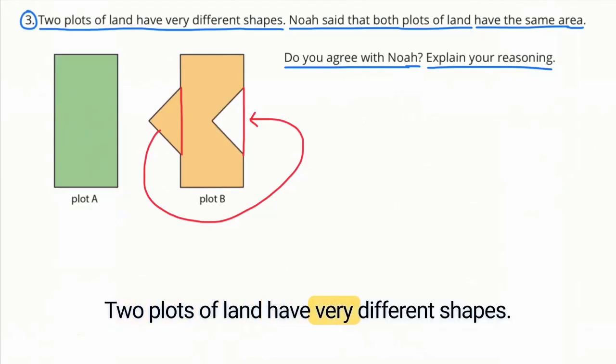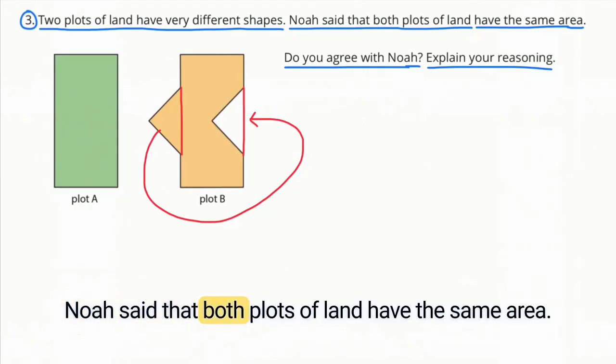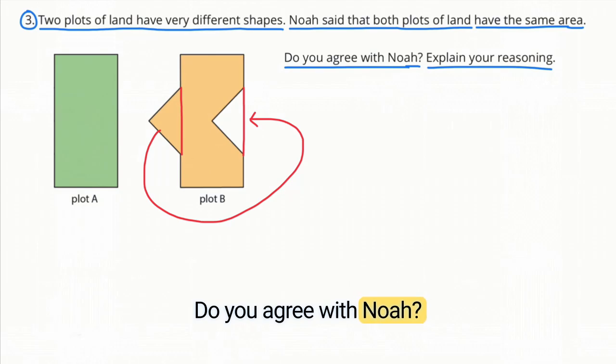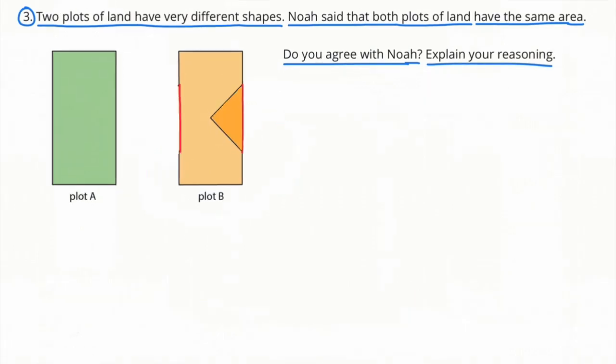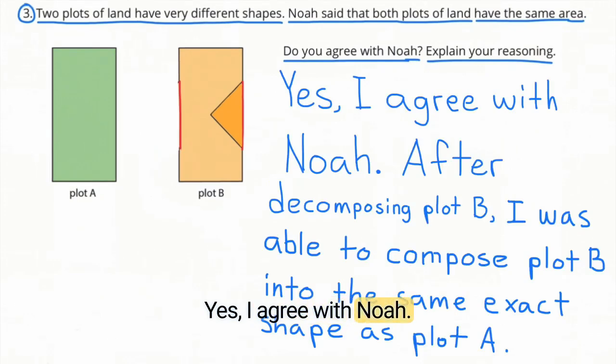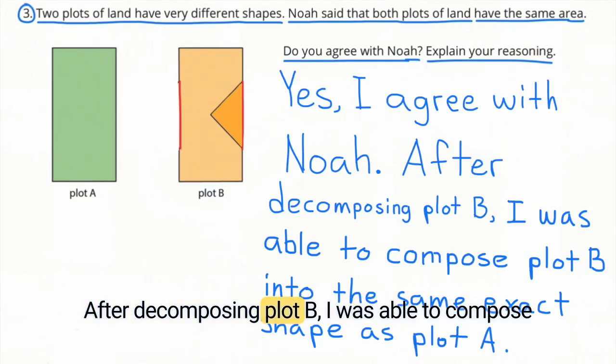Number 3. Two plots of land have very different shapes. Noah said that both plots of land have the same area. Do you agree with Noah? Explain your reasoning. Yes, I agree with Noah. After decomposing plot B,